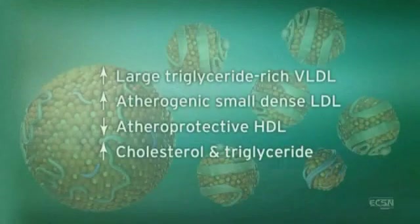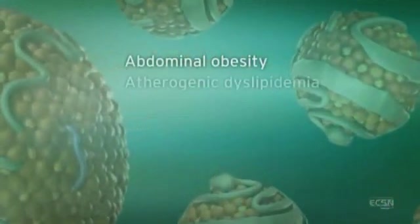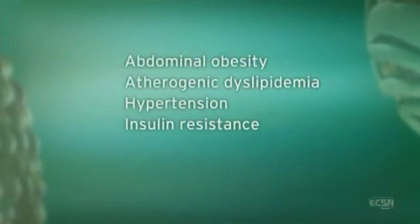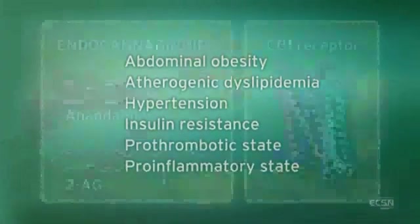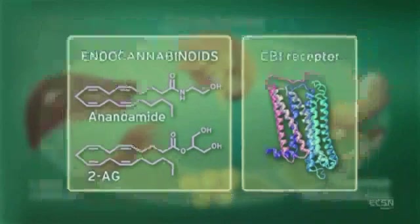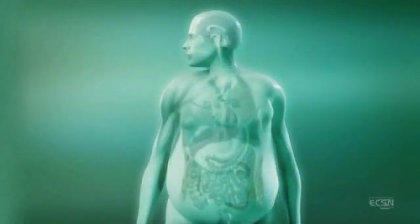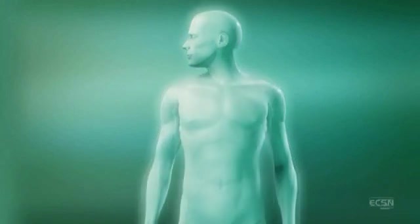Metabolic dysregulation leads to a constellation of symptoms including abdominal obesity, atherogenic dyslipidemia, hypertension, insulin resistance, prothrombotic state, and pro-inflammatory state. As basic and clinical research progresses, we will continue to increase our understanding of the central and peripheral endocannabinoid system and its role in the regulation of metabolic function.